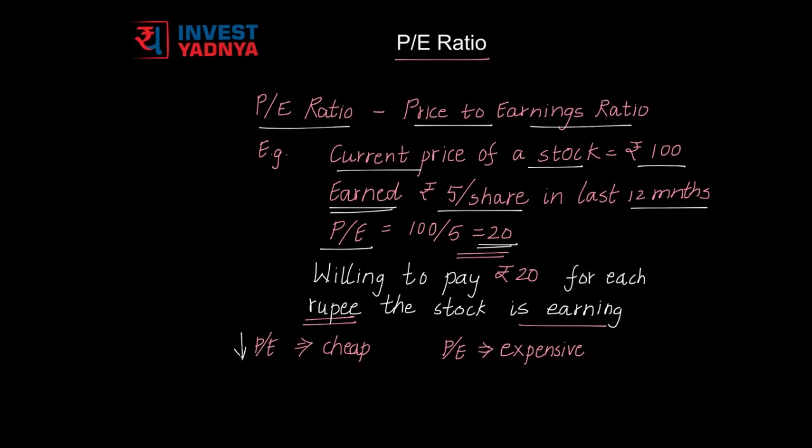When the P.E. Ratio is lower, it indicates that the stock is cheap to buy, and when the P.E. Ratio is higher, it indicates that the stock is expensive to buy.